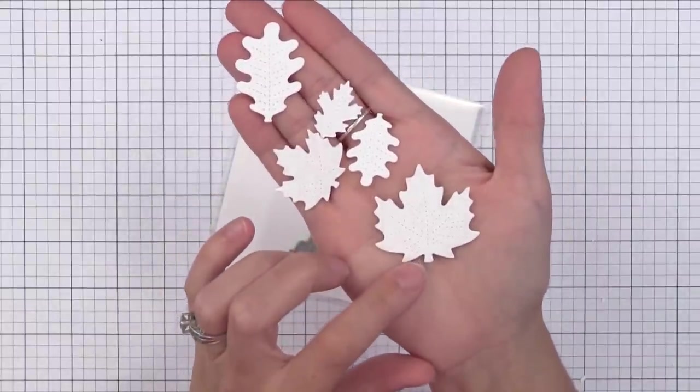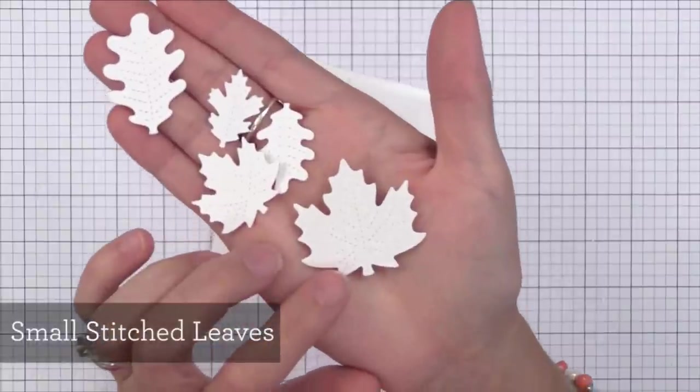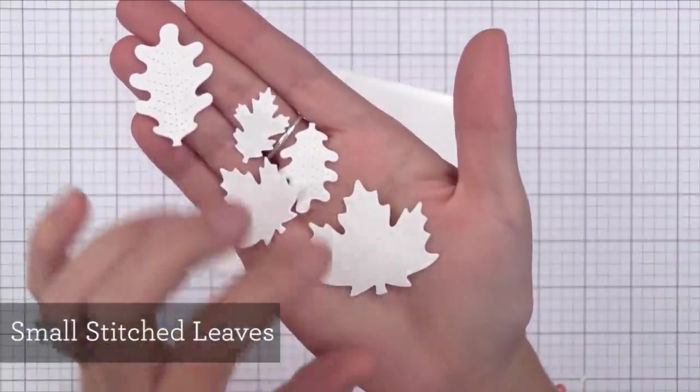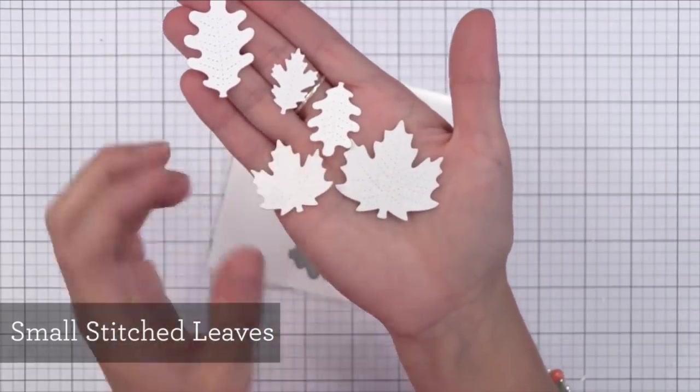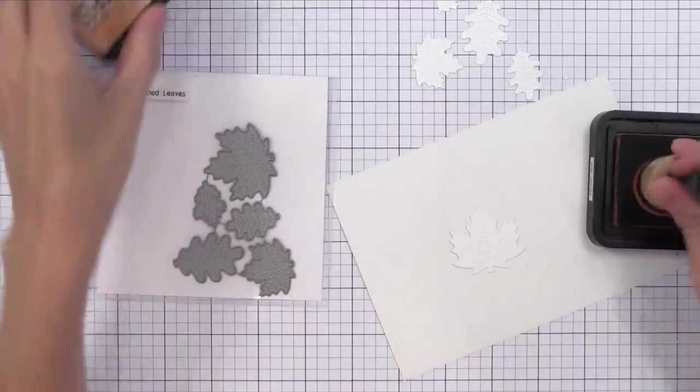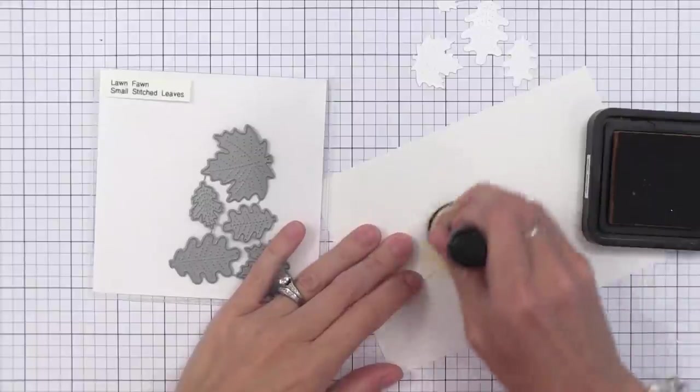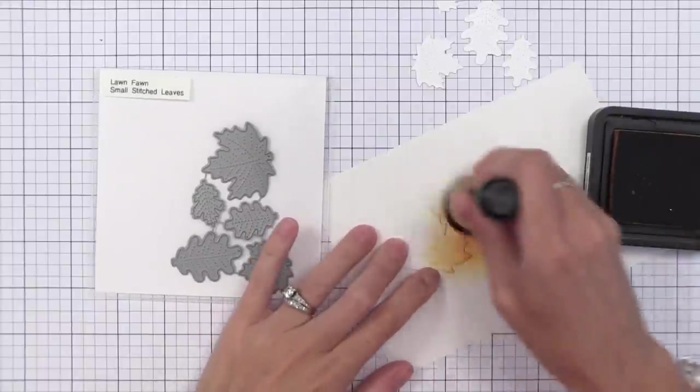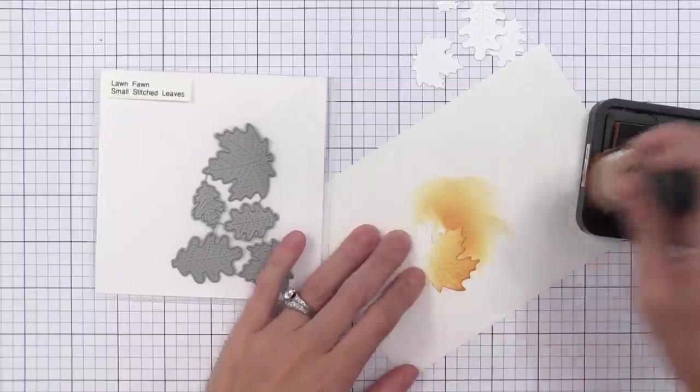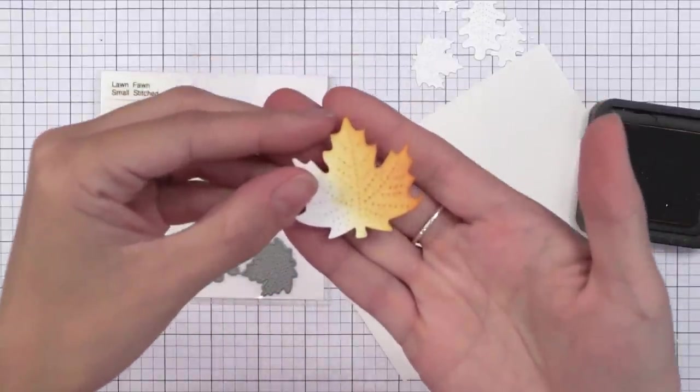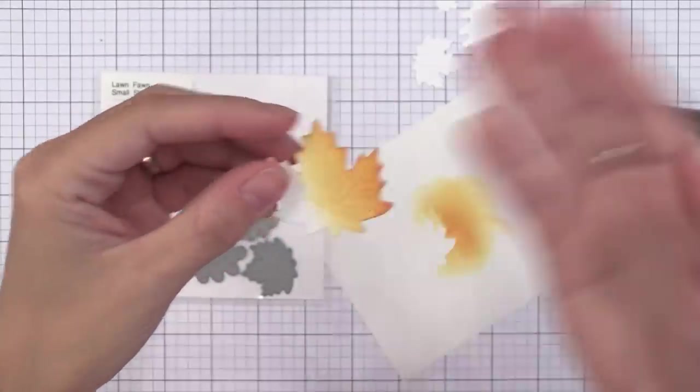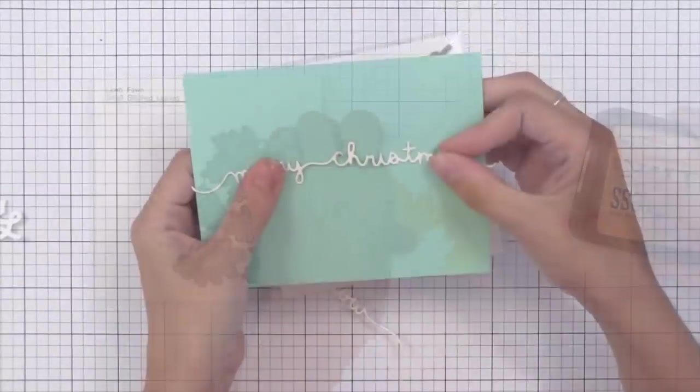Now in the past Lawn Fawn has had the stitched leaves in a larger set and here is a smaller set and I think these are adorable. They offer the little stitching in the center of the leaves. It's kind of hard to see on these white dies or white die cuts but when you rub ink over it, check this out. You can really see the stitching on the center of the leaves. It really kind of brings them to life and really adds fun detail to it. I will definitely be die cutting and inking up a bunch of these to scatter across my Thanksgiving table.